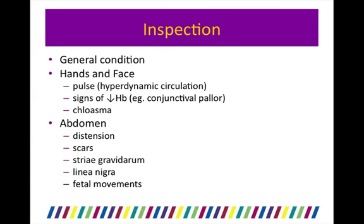Start with a general inspection including the general condition of the patient and whether they are comfortable at rest. This should be followed by inspection of the hands and face, including the pulse. Hyperdynamic circulation is one of the physiological changes of pregnancy. Look for any signs of anaemia, which is common and physiological in the third trimester, shown by conjunctival pallor. Moving on to the abdomen, for examination purposes the patient is likely to be in the third trimester, with distention of the abdomen and a pelvic mass consistent with this stage of pregnancy.